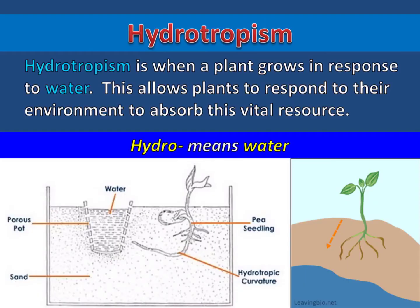Hydrotropism is when a plant grows in response to water. This allows plants to respond to their environment to absorb this vital resource.